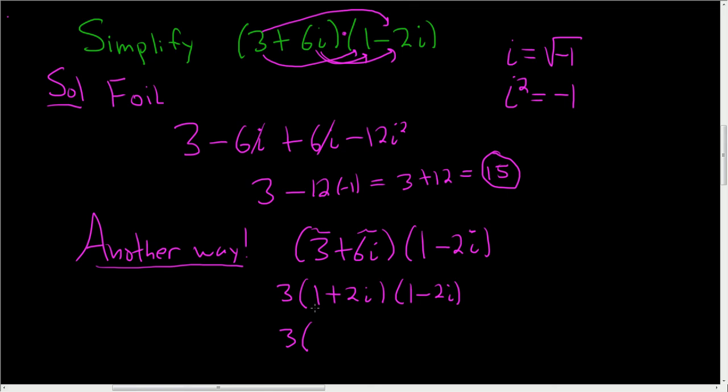Whenever you have a complex number, like 1 plus 2i, and then its conjugate, 1 minus 2i. So for example, if you had 3 plus 2i and 3 minus 2i, this would work. If you had 5 plus 6i and 5 minus 6i, this would work. So here we have 1 plus 2i, 1 minus 2i.